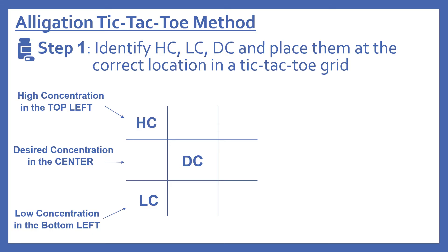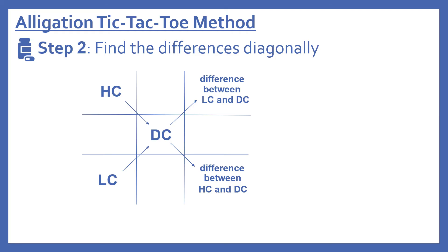Now we're going to look at the allegation tic-tac-toe method. Step one: we're going to identify the high concentration, low concentration, and desired concentration, and place them at the correct location in a tic-tac-toe grid — that's where it gets its name. The high concentration goes in the top left, the desired concentration goes in the very center, and the low concentration goes in the bottom left. For step two, we're going to find the differences diagonally. We find the difference between the high concentration and the desired concentration and write that in the bottom right grid. Then we find the difference between the low concentration and the desired concentration and write that in the top right grid.